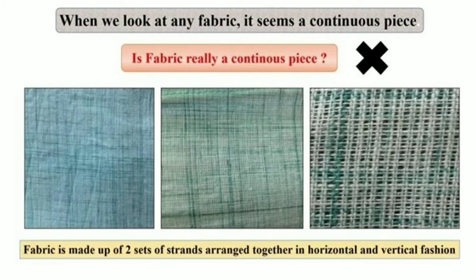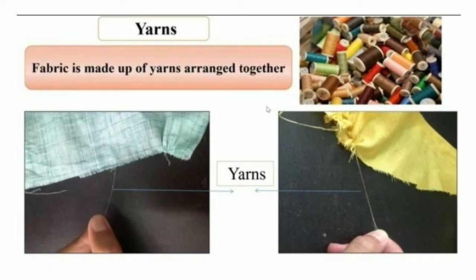Now, when you look at any fabric, it seems a continuous piece of cloth. But is fabric really a continuous piece of cloth? Students, I want all of you to do this activity at home. You will take a piece of cloth and observe it very minutely. When you observe it, you will find out that the fabric is made up of two sets of strands arranged together in a horizontal and vertical fashion. Fabric is made up of yarns arranged together.